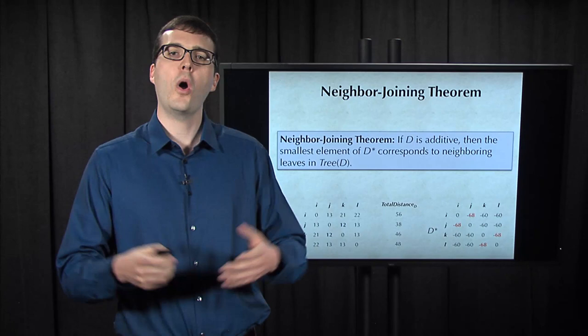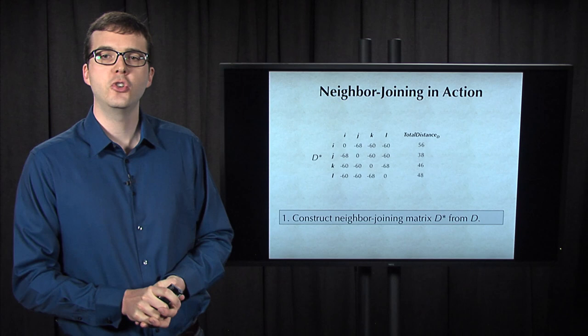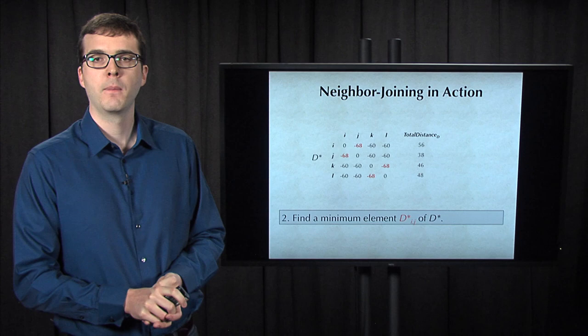First, we construct the matrix D*, and I'll move that up from the previous slide. There are two pairs of leaves that correspond to a minimum element of D*. I and J must be neighbors, and K and L must be neighbors as well.